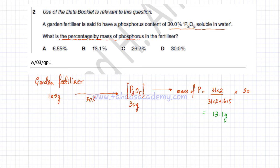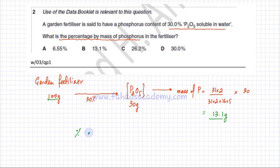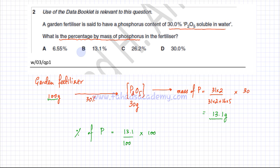Starting with 100 grams, the fertilizer contains 13.1 grams of phosphorus. So the percentage of phosphorus in the fertilizer is 13.1 divided by 100, which equals 13.1%. Therefore, option B is the correct answer.